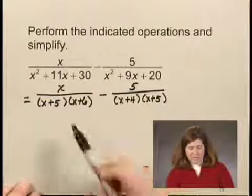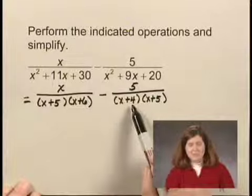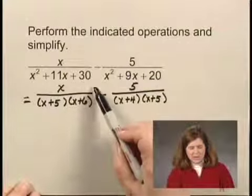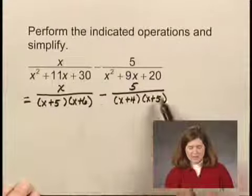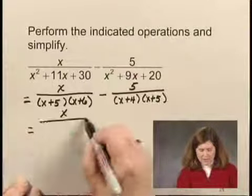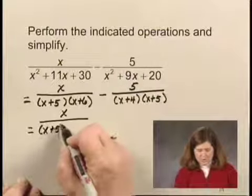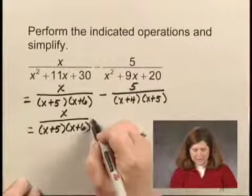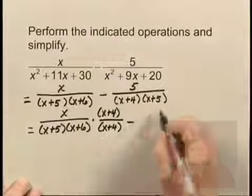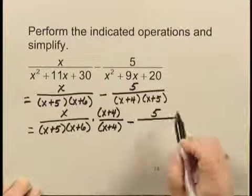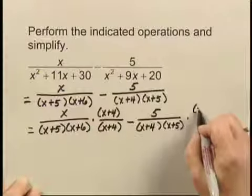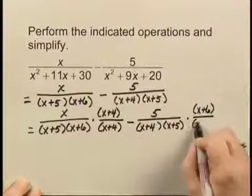The least common multiple will then be x plus 5 times x plus 6 times x plus 4. This means that I need to multiply the first rational expression by x plus 4 over x plus 4, and the second by x plus 6 over x plus 6. Writing that out, that gives me x over x plus 5 times x plus 6 times x plus 4, minus 5 over x plus 4 times x plus 5, times x plus 6 over x plus 6.